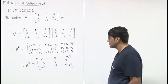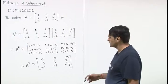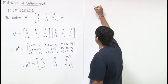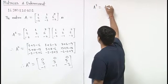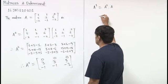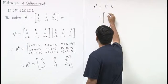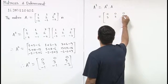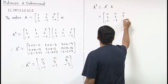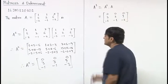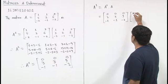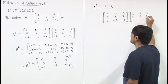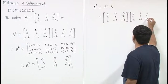A squared is not zero, so to check nilpotent of order 3 we compute A cubed = A squared times A. A squared is [0, 0, 0; 3, 3, 9; -1, -1, -3] and A is [1, 1, 3; 5, 2, 6; -2, -1, -3].